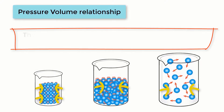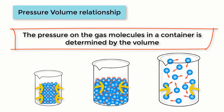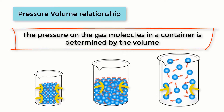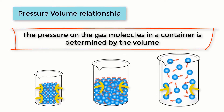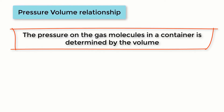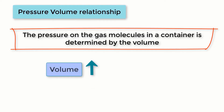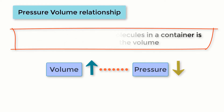Thus, the pressure on the gas molecules in a container is determined by the volume, or how large the container is. The larger the volume, the less pressure on the gas molecules, and the smaller the volume of the container, the greater the pressure on the gas molecules will be. Thus, in the pressure-volume relationship, as volume increases, pressure decreases. As volume decreases, pressure increases. This is how air is brought into and out of the lungs.